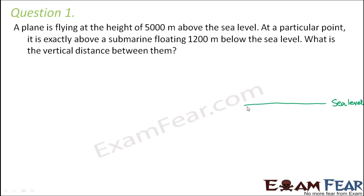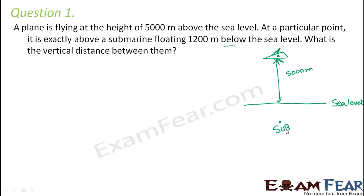Let us first draw a diagram so that we understand it better. We draw the sea level as a line. The aeroplane is at a height of 5000m above it. The submarine is below the sea level at a distance of 1200m. The question is to find out the vertical distance between the aeroplane and the submarine.